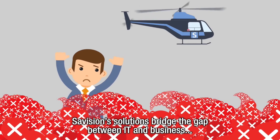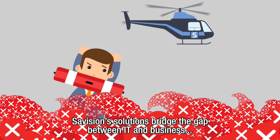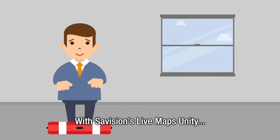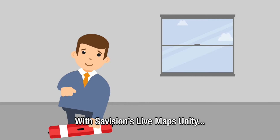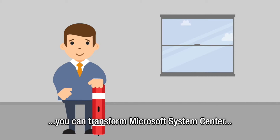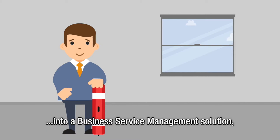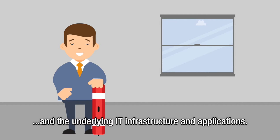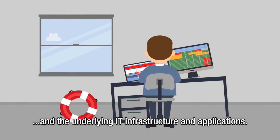Savision's solutions bridge the gap between IT and business by transforming complex IT data into predictive, actionable, and relevant information. With Savision's Live Maps Unity, you can transform Microsoft System Center into a business service management solution to better understand the dependencies between your company's business services and the underlying IT infrastructure and applications.